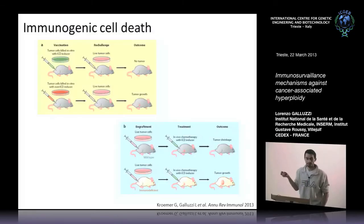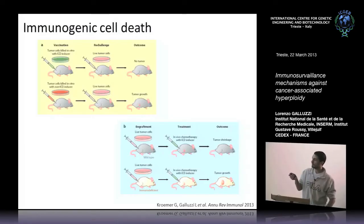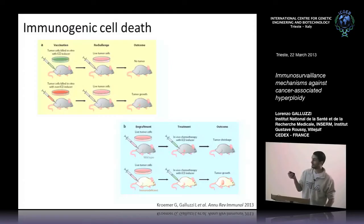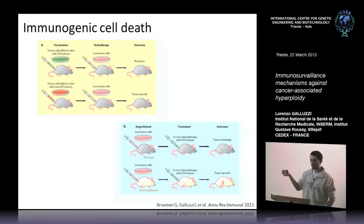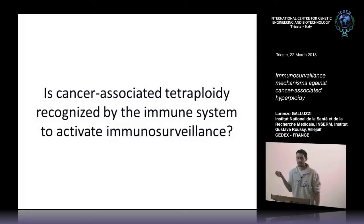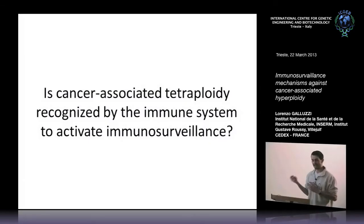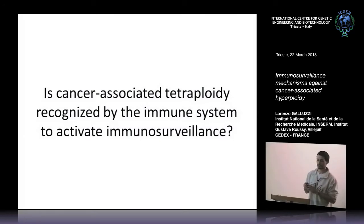Alongside, you can test the effect of your molecule in mice that already have a tumor and compare the effects in immunocompetent versus immunodeficient mice. If your molecule induces immunogenic cell death, you should get an effect in immunocompetent mice but a much reduced effect in immunodeficient mice, meaning the immune system is important for the anti-cancer activity of your compound. At this stage, we asked whether the tetraploidy and hyperploidy associated with cancer might be linked to immune recognition and activation of an immunosurveillance mechanism.